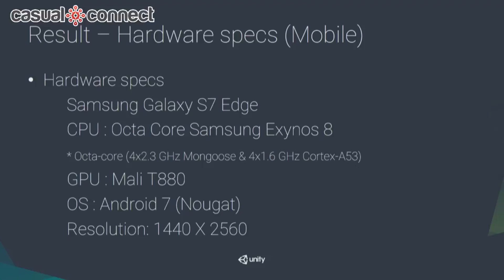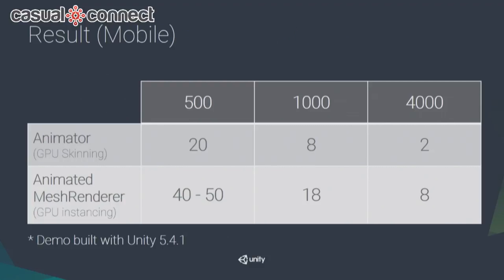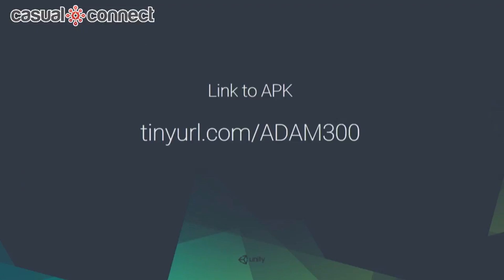For mobile, I tested on a Galaxy S7. With 4,000 animators I got 2 frames per second; with 4,000 animated mesh renderers I got 8 frames per second. Lowering to 500 characters: 500 animators gave 20 FPS, and 500 animated mesh renderers gave 40–50 FPS — a very usable range. You can download an APK from the provided link to try it on your phone. The demo has 300 Adams running at 60 FPS on the Galaxy S7.